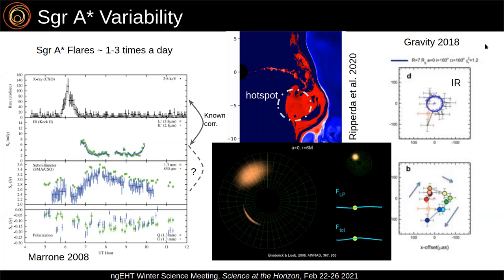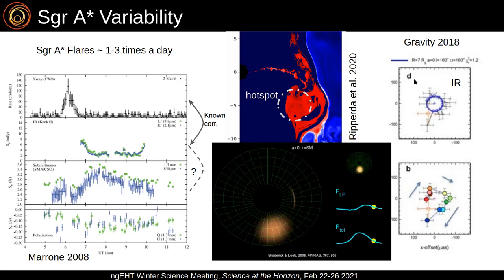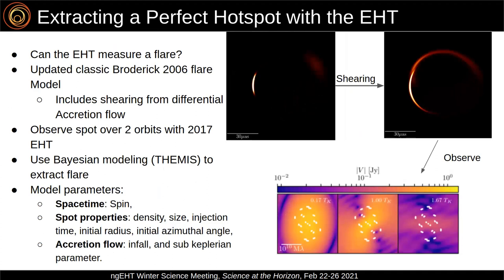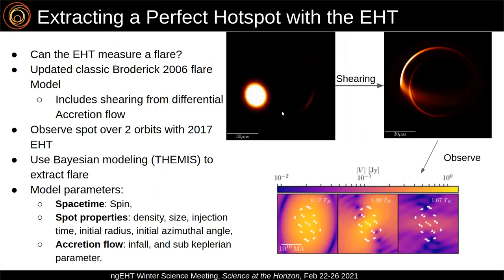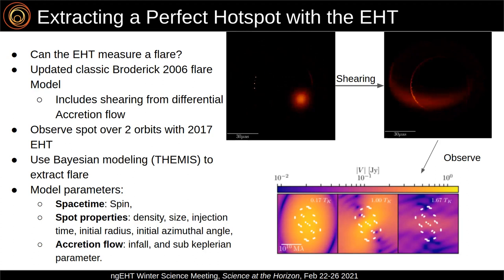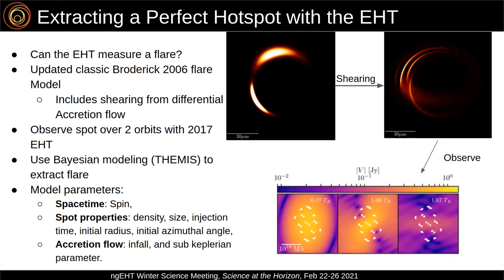One prediction of the hot spot model is that during a flare, you would expect to see Sag A*'s center of light orbit — exactly what was seen in the 2018 GRAVITY results, where the center of light displayed orbital motion during a flare, well explained by a hotspot very close to the black hole at around 7 times the gravitational radius. The question for the EHT is: if there's hot plasma orbiting the black hole, can the current EHT array at 230 GHz actually measure and extract this? We updated the classic Broderick and Loeb 2006 flare model to introduce the effects of shearing, important because the hotspot is embedded in a differentially rotating accretion disk.